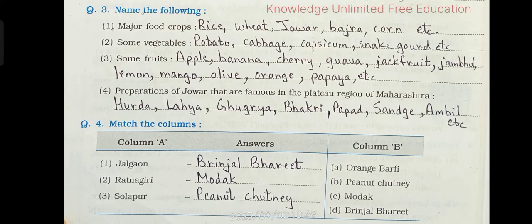Let's see question number three: name the following. Number one, major food crops — answer: rice, wheat, jawar, bajra, corn, etc. Number two, some vegetables — potato, cabbage, capsicum, snake gourd, etc. Number three, some fruits — apple, banana, cherry, guava, jackfruit, jambul, lemon, mango, olive, orange, papaya, etc. Number four, preparations of jawar that are famous in the plateau region of Maharashtra — answer: hurda, lahiya, gugriya, bhakri, papad, ambil, etc.